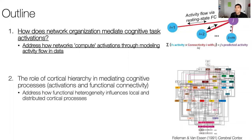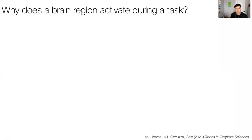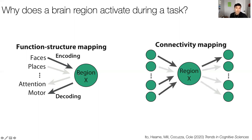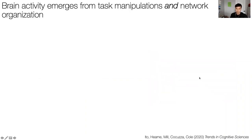Starting with the first point: why does a brain region activate during a task? A standard approach is to map function or task conditions onto the activity of a brain area. But if you ask most people what determines a brain region's activity, it's likely to be connectivity—when a neuron spikes, that spike likely influences the membrane potential of downstream connected neurons. We wanted to merge these two ways of thinking by combining task manipulation with connectivity mapping.